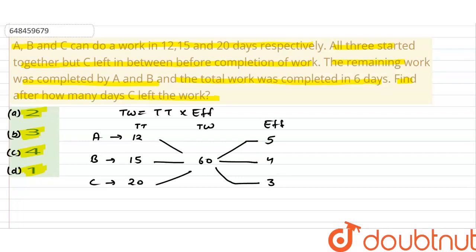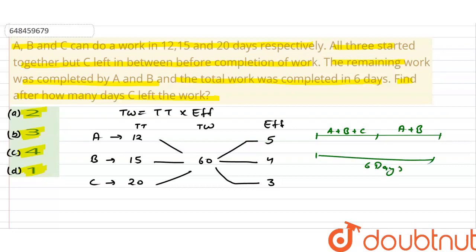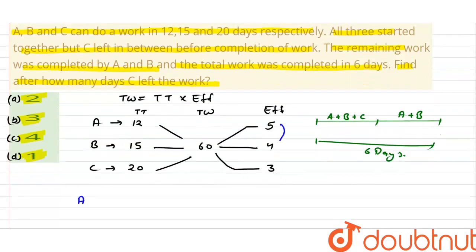अब हम देखते हैं question किस तरीके से solve हो रहा है। Question हमें बोल रखा है कि 3 ने काम start किया — A+B+C ने। उसके बाद C छोड़ गया, और A+B ने remaining काम किया। Total time उन्हें 6 days लगे। A और B ने पूरा 6 दिन काम किया, और A+B एक दिन में 9 काम करते हैं। तो A+B का 6 दिन का work = 9 × 6 = 54।